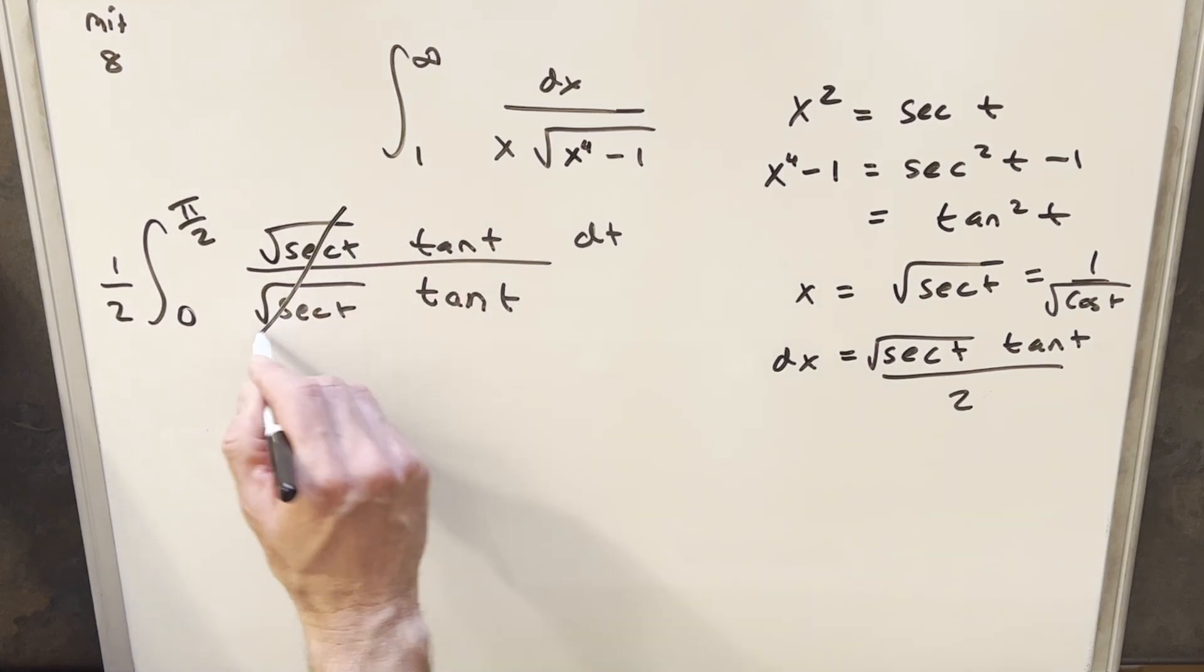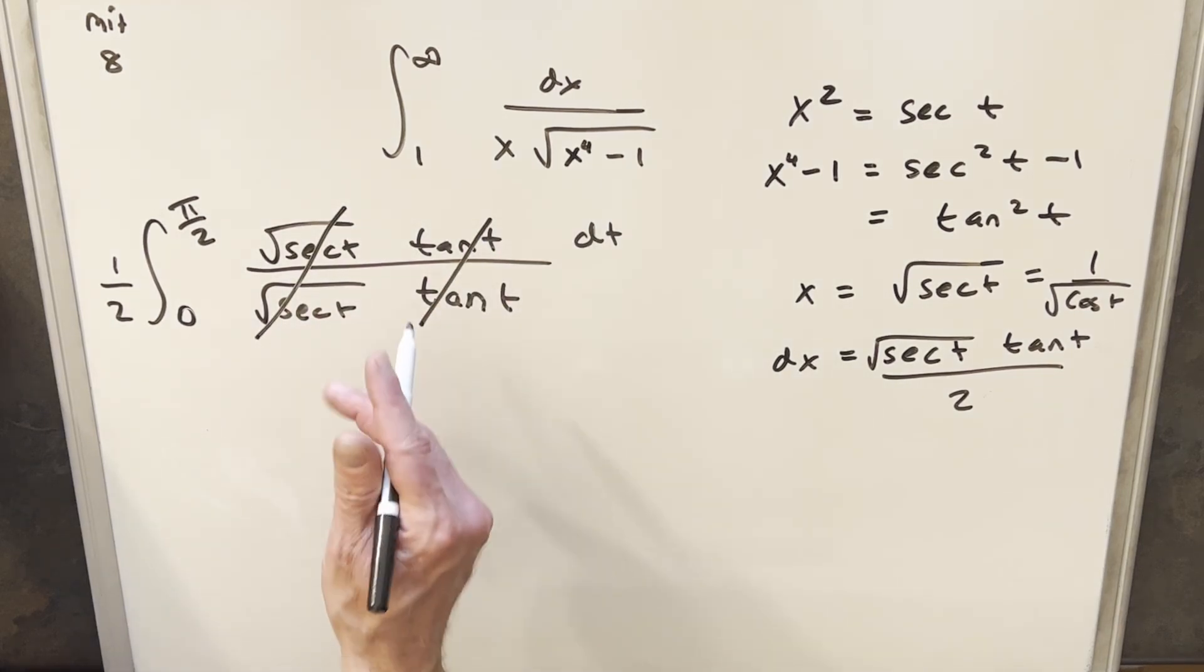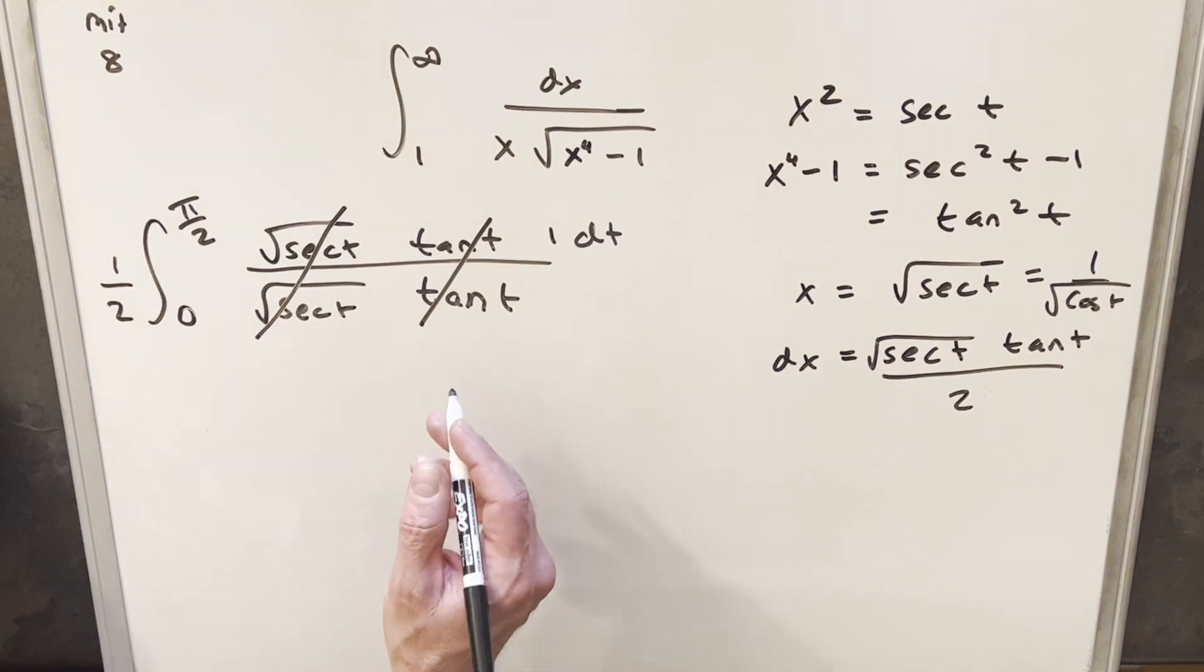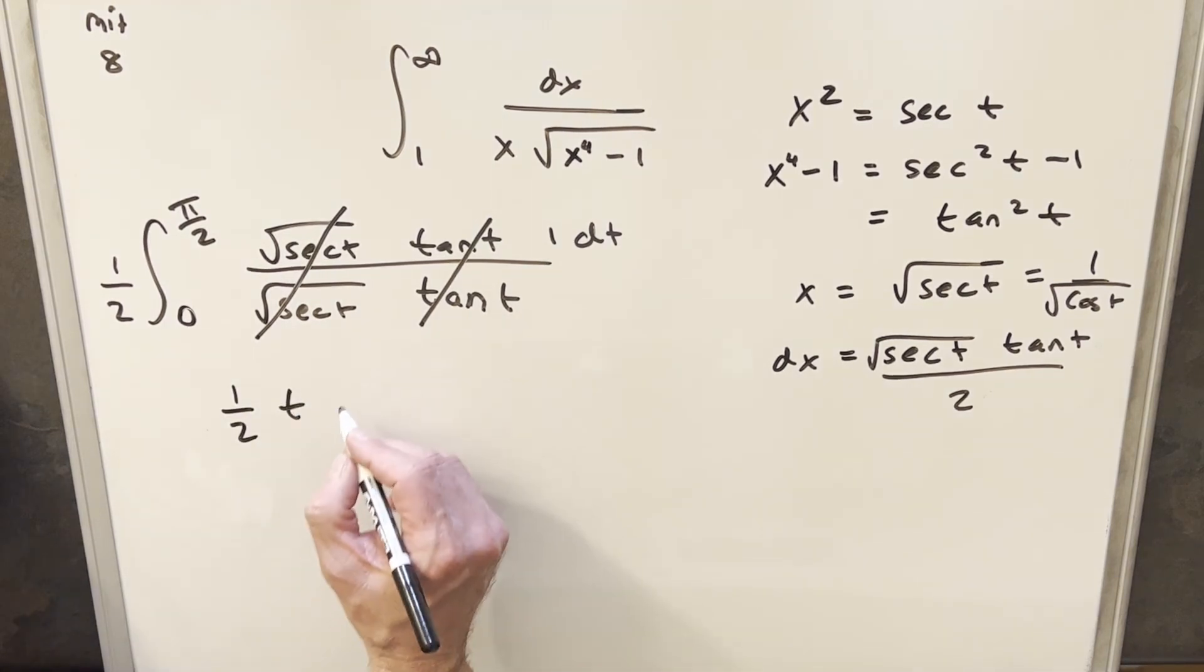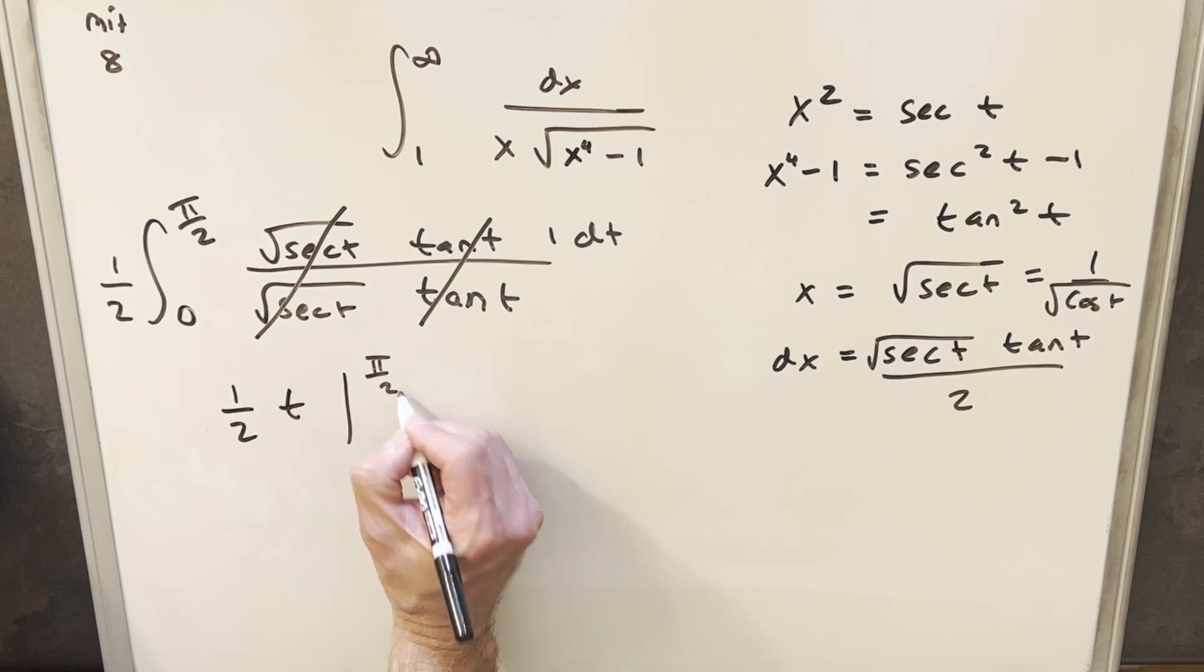And this is really nice because everything's going to cancel. That's going to cancel. That's going to cancel. And we're just integrating 1. So let's just do this now. We're going to have integrating 1 dt. It's just going to be t. And we're just evaluating this from 0 to pi over 2.